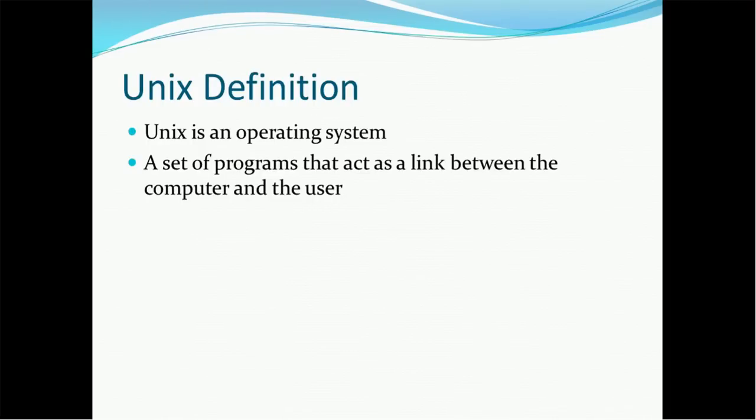Let's first start with the Unix definition. Unix is an operating system. For example, Windows is an operating system. On the same line, Unix is also an operating system. It is a set of programs that act as a link between the computer and user. This is the definition of the operating system - how end users like us interact with the computer through the operating system. There will be a set of programs and commands that will be used by users to interact with the system.